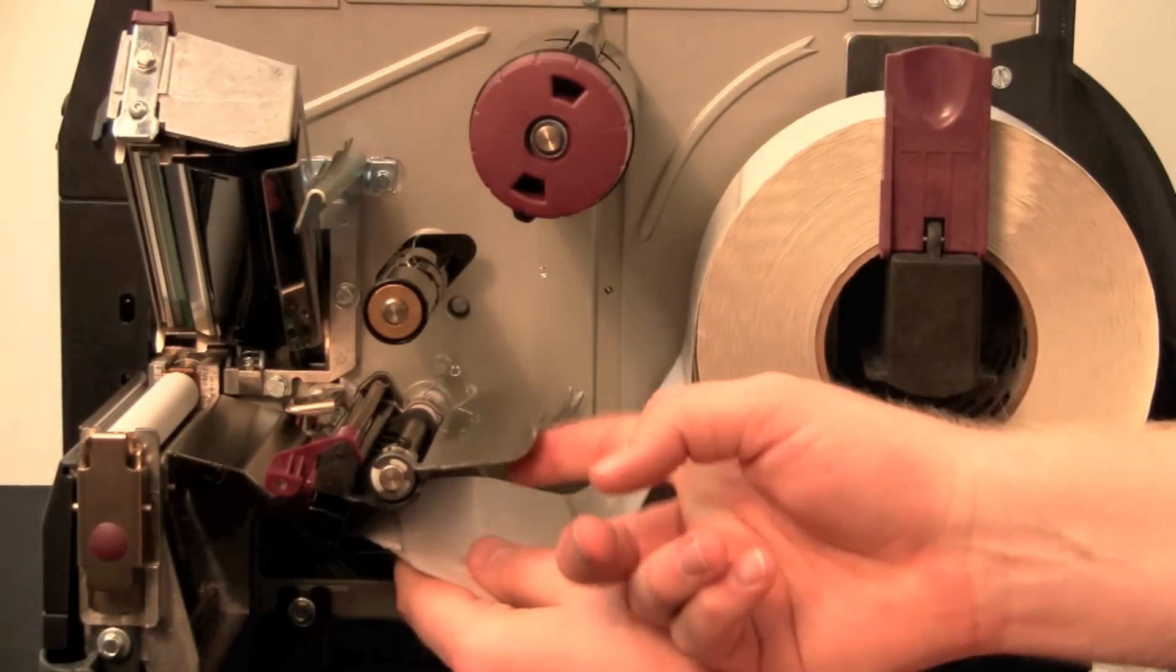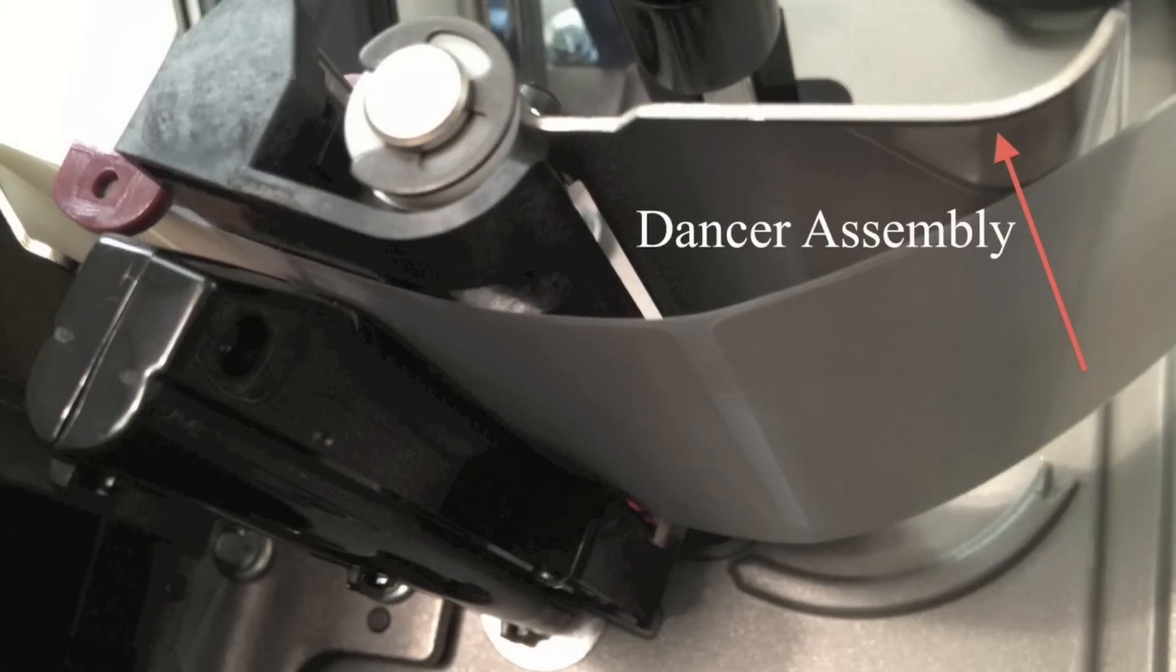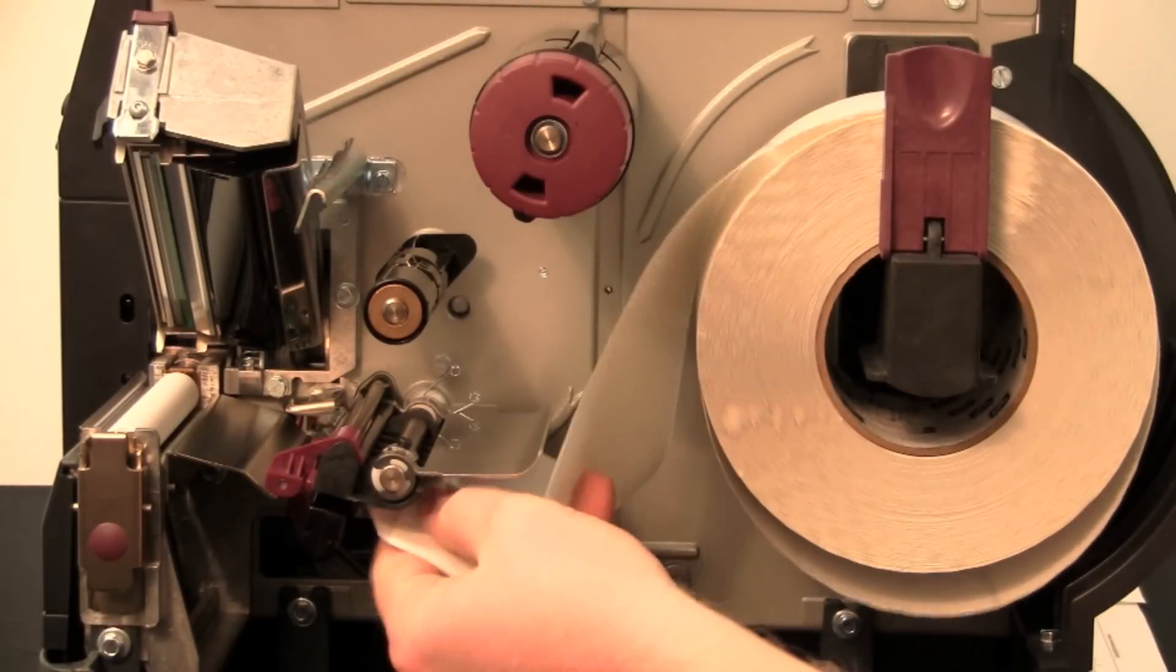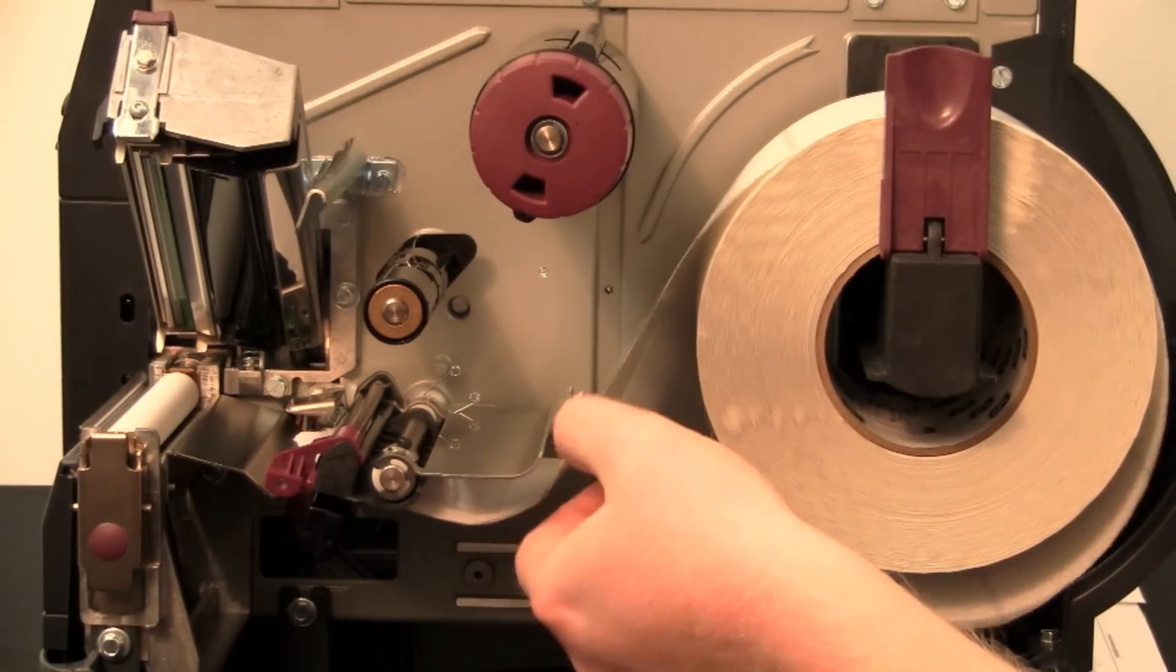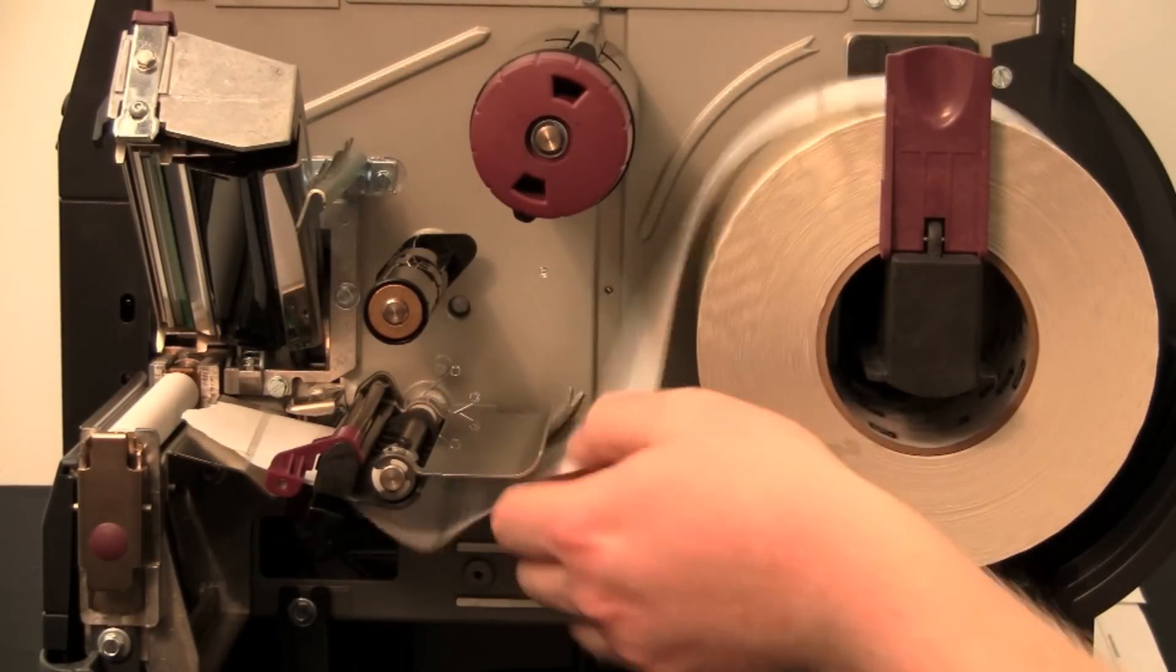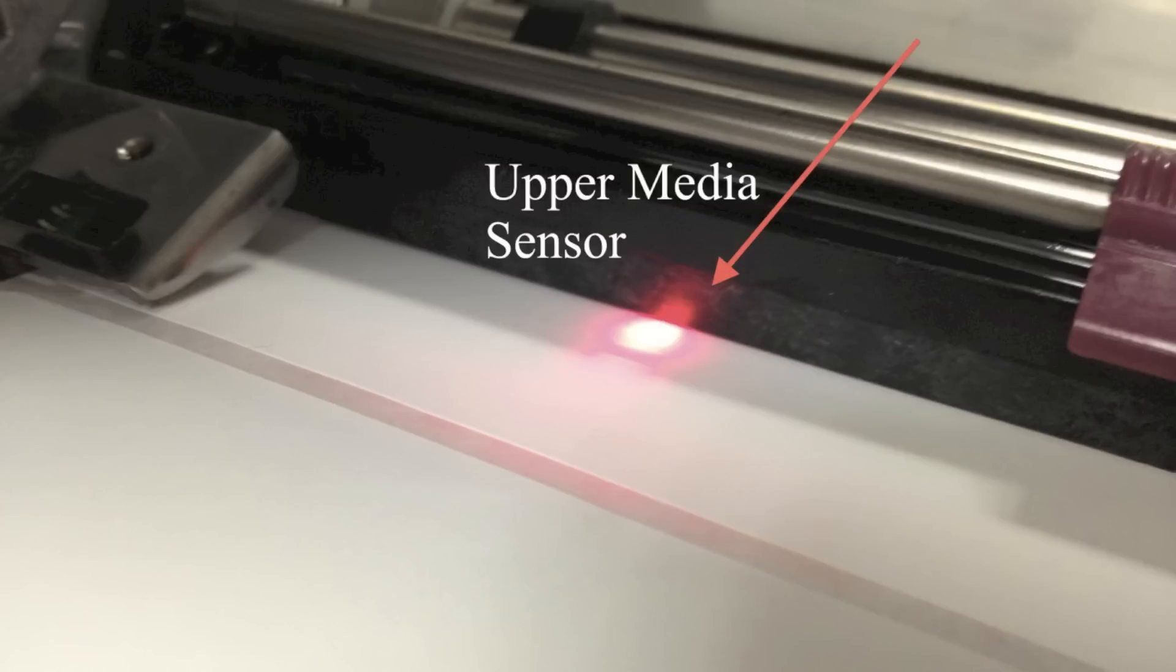Feed the media under the dancer assembly, then through the upper media sensor, and then the ribbon sensor.